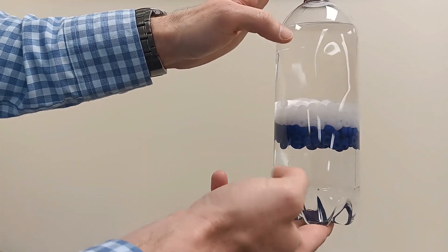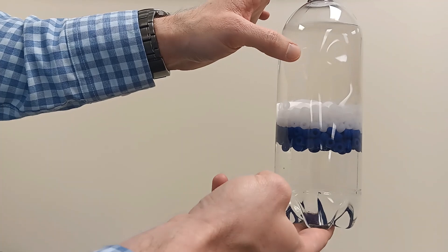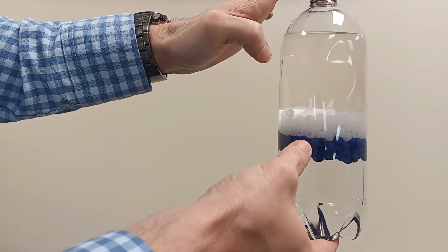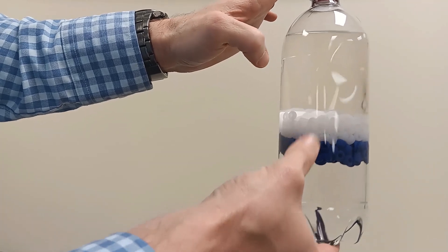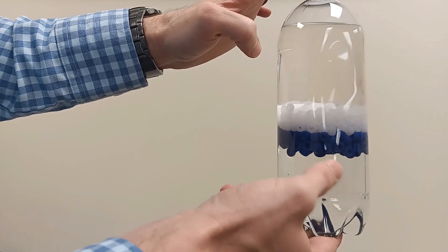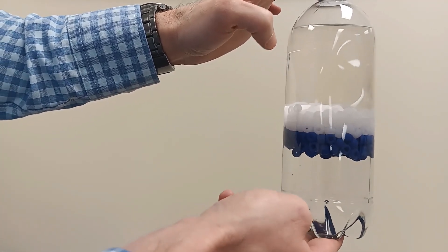Well, now that it's separated, the isopropanol is on top. The white beads are a little more dense than that. So they're here in the middle. The blue beads are more dense than the white beads. So they're underneath that. But the blue beads are less dense than the salt water. So they float on top of that.